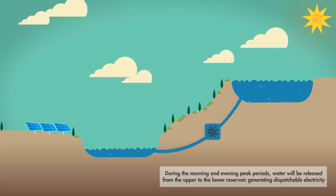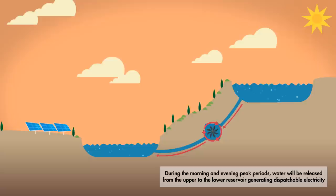During the morning and evening peak periods, water will be released from the upper to the lower reservoir, generating dispatchable electricity.